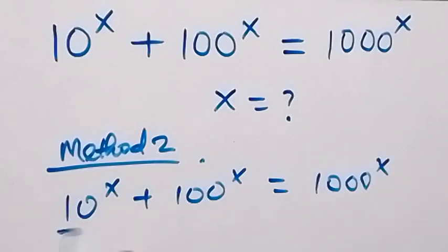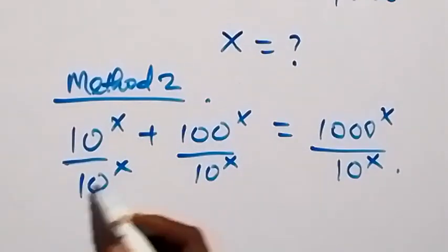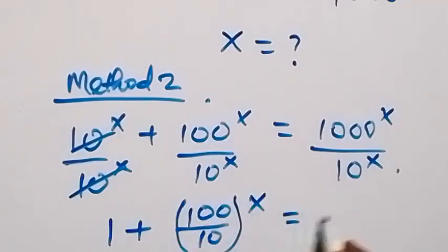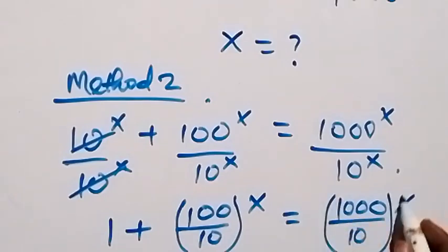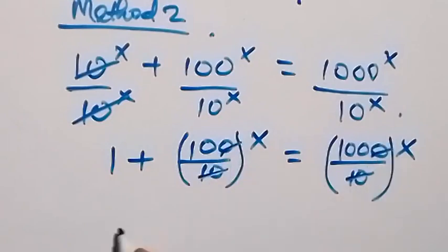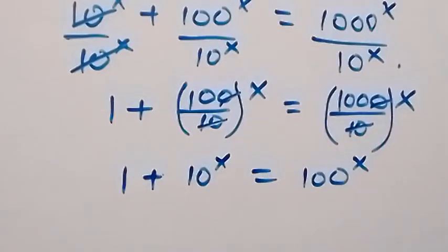Now for Method 2. This time we divide by 10 raised to power x. So dividing every term by 10 raised to power x: this gives 1, plus 100 over 10 raised to power x equals 1000 over 10 raised to power x. From here, 10 cancels a zero and this becomes 1 plus 10 raised to power x equals 100 raised to power x.